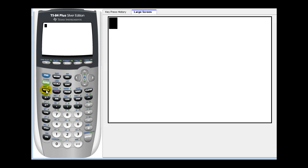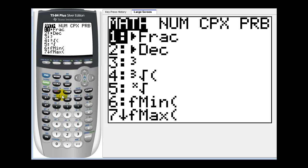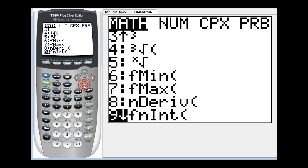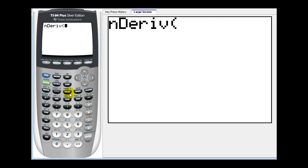If we press the math key and then scroll down to option 8, nDeriv will evaluate the derivative function at a given value of x. So we press enter. Next we type in our given function. It was x³/4 - 3x.